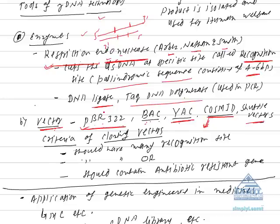What are criteria of cloning vectors? Some of the criteria are listed here. It should have many recognition sites. Second criteria is, it should have origin of replication because in the absence of origin of replication, the foreign DNA would not be able to replicate. It should also contain antibiotic resistant gene. It helps in selection of transformed cell from non-transformed cell.